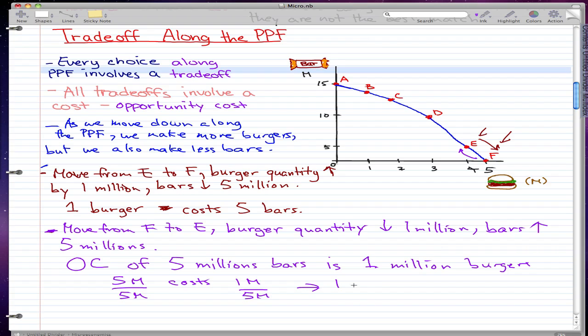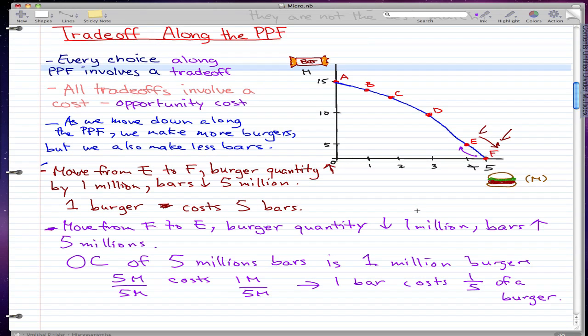If we divide 5 million, 1 bar costs 1 fifth of a burger. So 1 bar costs 1/5 of a burger. And that's how I got it, that's how I got 1 bar costs 1 fifth of a burger. So I hope you learned something.